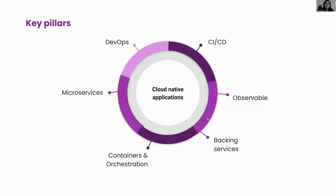Microservices is an architecture where software is composed of small, loosely coupled systems that communicate with each other through well-defined APIs. Each of these systems is independent and run by small, self-contained teams. Microservices architectures make applications faster to develop and deploy, and easier to scale — because they are loosely coupled, independent, small systems. Containers are the core of cloud native; whenever somebody talks about cloud native, containers will most likely be part of the conversation. CNCF places microservices containerization as the first step in their guidance for enterprises beginning their cloud native journey. Containers are packages that enable applications to run in any environment by virtualizing all the necessary tools and runtime files.